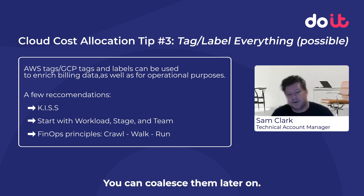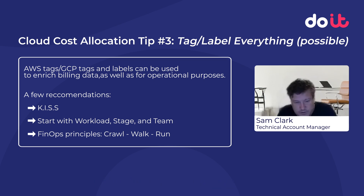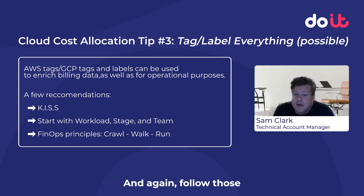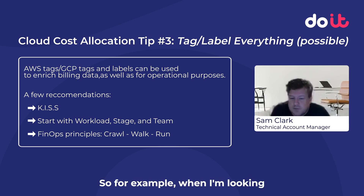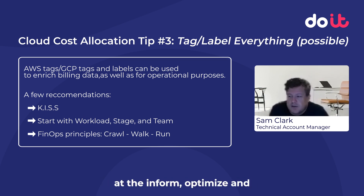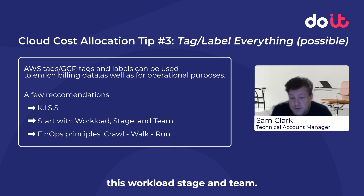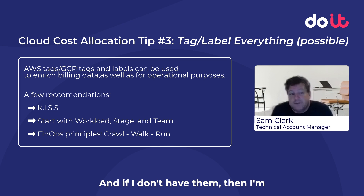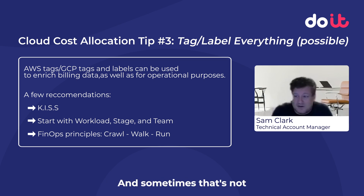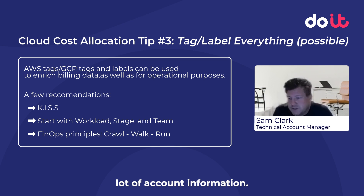You can coalesce them later on, but it's just more data processing work that needs to be done. And again, follow those FinOps principles — inform, optimize, and operate. I would start off with workload, stage, and team. And if I don't have them, I'm going to fall back to accounts, though sometimes that's not going to give me very detailed information.